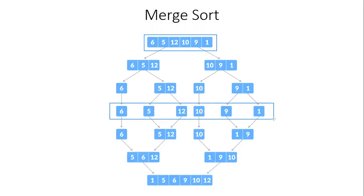Now we apply merge sort. The division phase is complete. Merge sort is applied on the six single-element lists. First, merge 5 and 12: 5 is smallest, inserted first; then 12. Merge 1 and 9: 1 is smallest, insert first; then 9. We get two sorted lists: [5, 12] and [1, 9]. Then merge [6, 10] similarly.